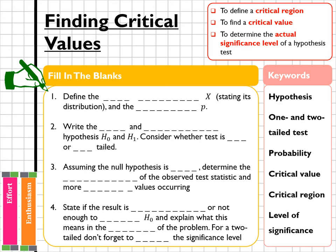Okay, so hopefully you should have got that step one was to define the test statistic x stating its distribution and the parameter p. Step two, you need to write the null and alternative hypothesis H₀ and H₁ and consider whether the test is one or two tailed. Remember, if it's one tailed then you'll have a less than or greater than sign. If it's two tailed you'll just have the not equal sign.